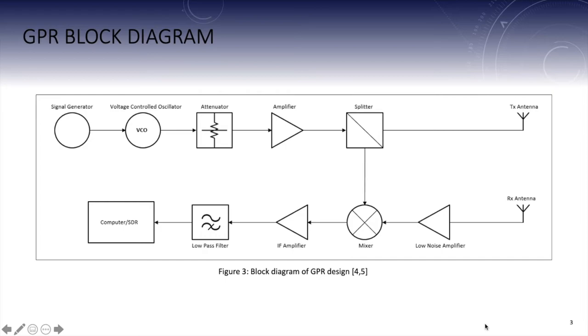The signal then reaches a splitter where the signal is passed through to the transmitting antenna and also sent to the mixer. The transmitted signal is received by the receiving antenna. Any noise carried by the signal is then reduced once the signal has passed through the low noise amplifier. At the mixer the original signal is mixed with the received signal. This signal then passes through the intermediate frequency amplifier which assists in stabilizing the frequency.